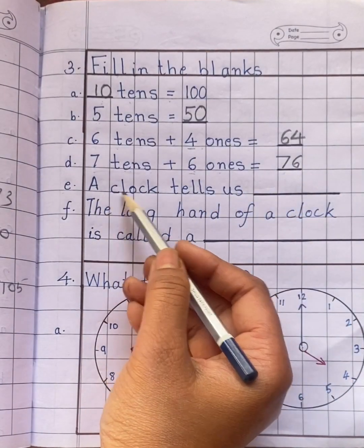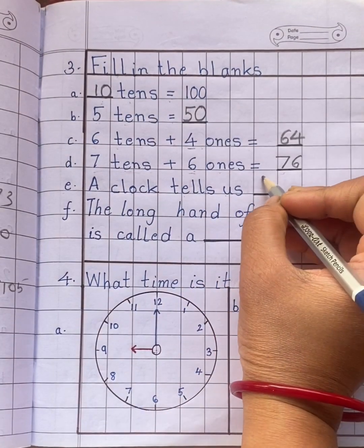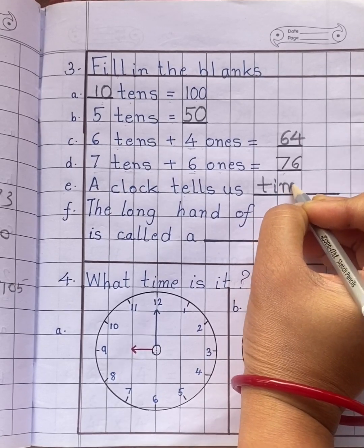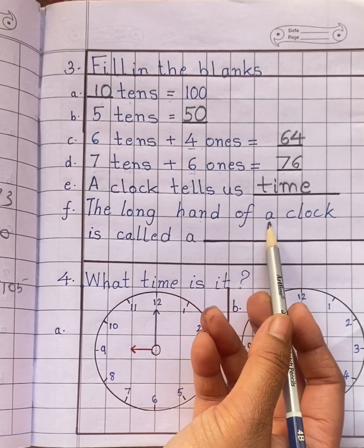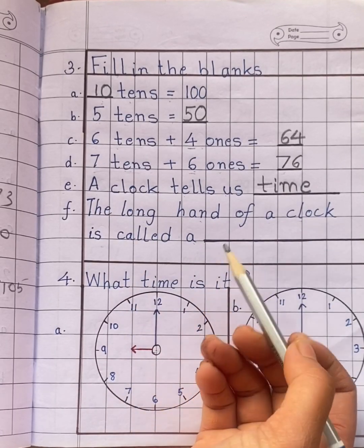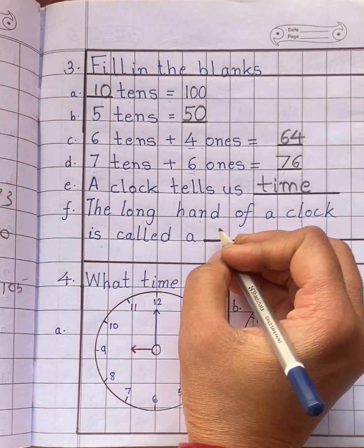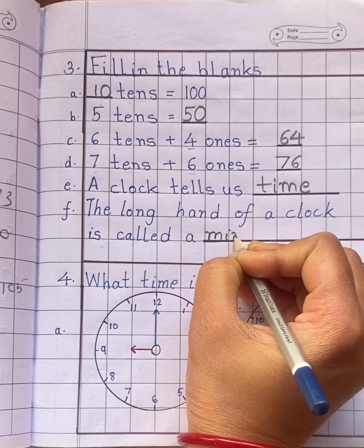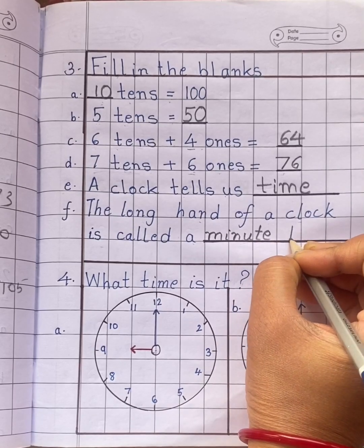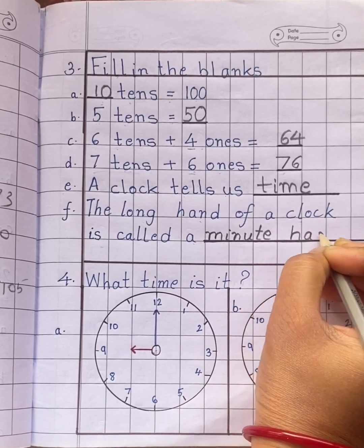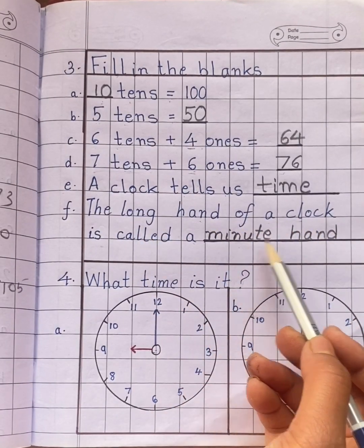Next question: a clock tells us time. T-I-M-E, time. The long hand of a clock is called a minute hand. M-I-N-U-T-E minute, H-A-N-D hand. The long hand of a clock is called a minute hand.